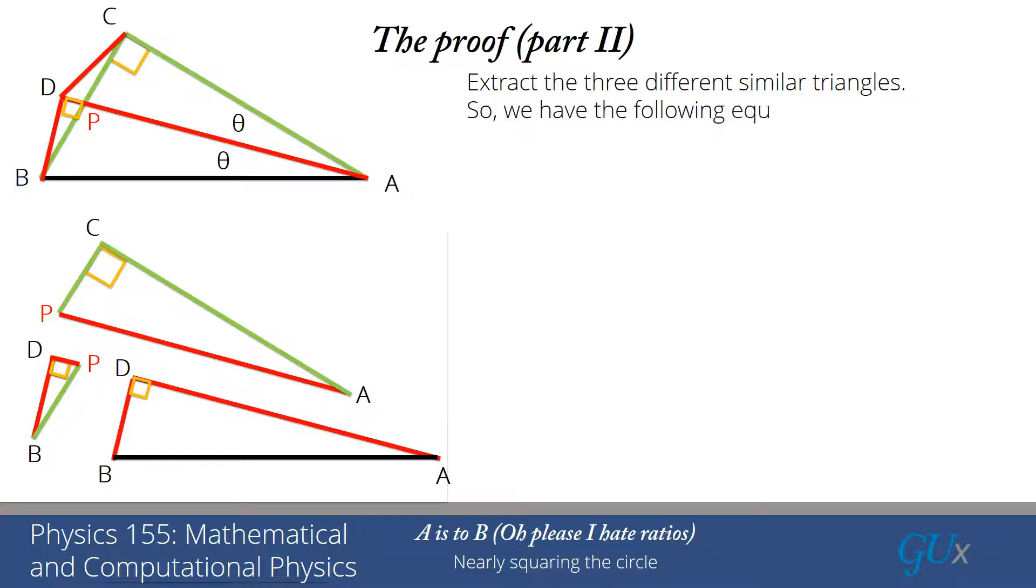All right. So we have the following equivalences, because these are similar triangles. And once again, they're similar triangles, because they are right triangles that have the same acute angle, which means all three angles of the triangles are the same. And similar triangles have the ratios of their sides the same for the different triangles. Each one is like a blown up scale of the other one.